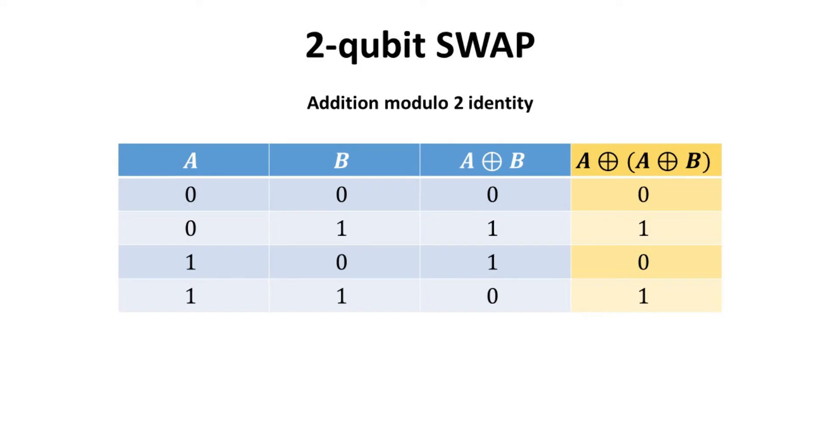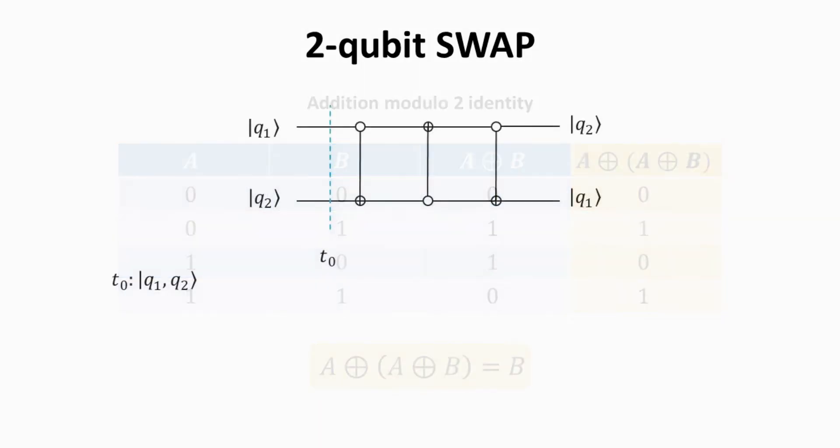With this truth table, we can easily evaluate the operation of A XOR A XOR B. One can readily verify the following identity as shown. Take note of this identity as we will be using it in what follows. Let's go over the circuit operation step by step. At time T0, the state of the two-qubit system is Q1, Q2. At time T1, we apply the CNOT operation using Q1 as the control qubit and Q2 as the target. Recall that the CNOT gate preserves the state of the control qubit and performs an XOR operation on the target qubit.